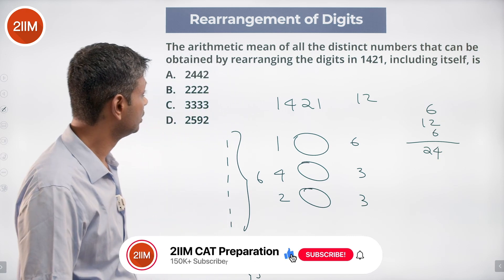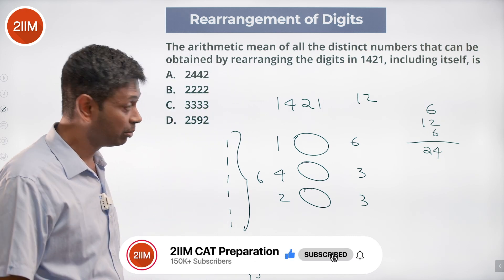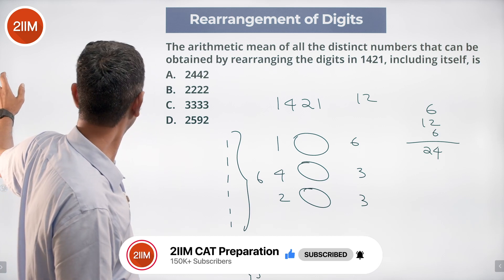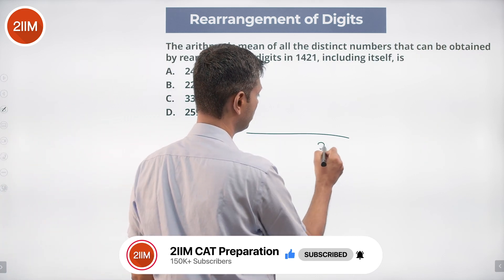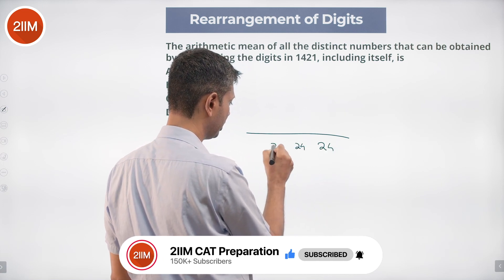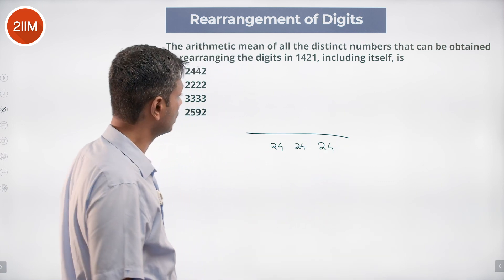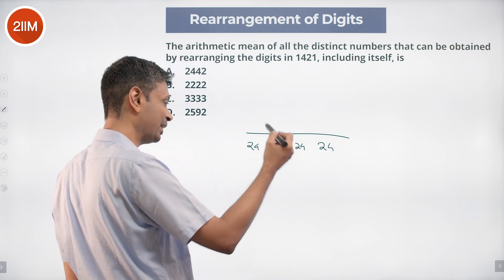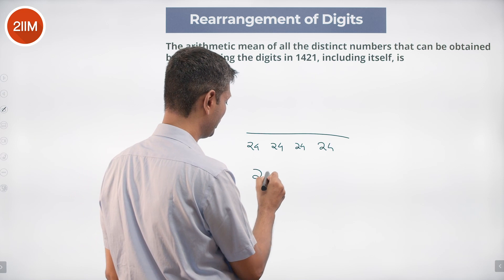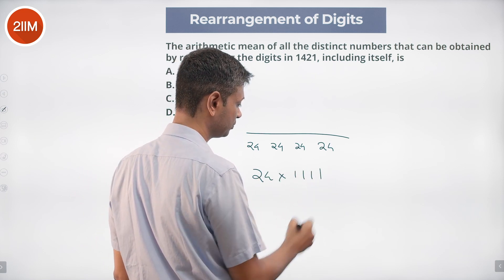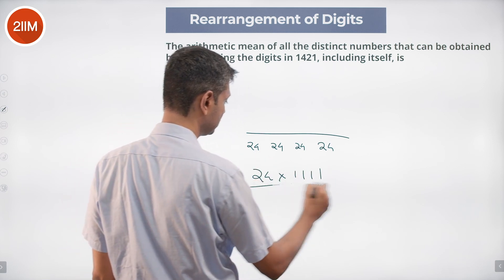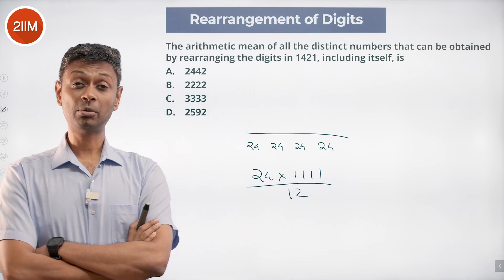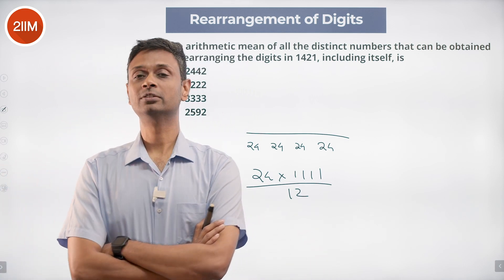The arithmetic mean is what we need to find. The sum of all digits in the units place is 24, and by symmetry it's also 24 in the tens place, 24 in the hundreds place, and 24 in the thousands place. So the sum of all the numbers is 24 × 1111. The average is that sum divided by 12, since there are 12 numbers total.